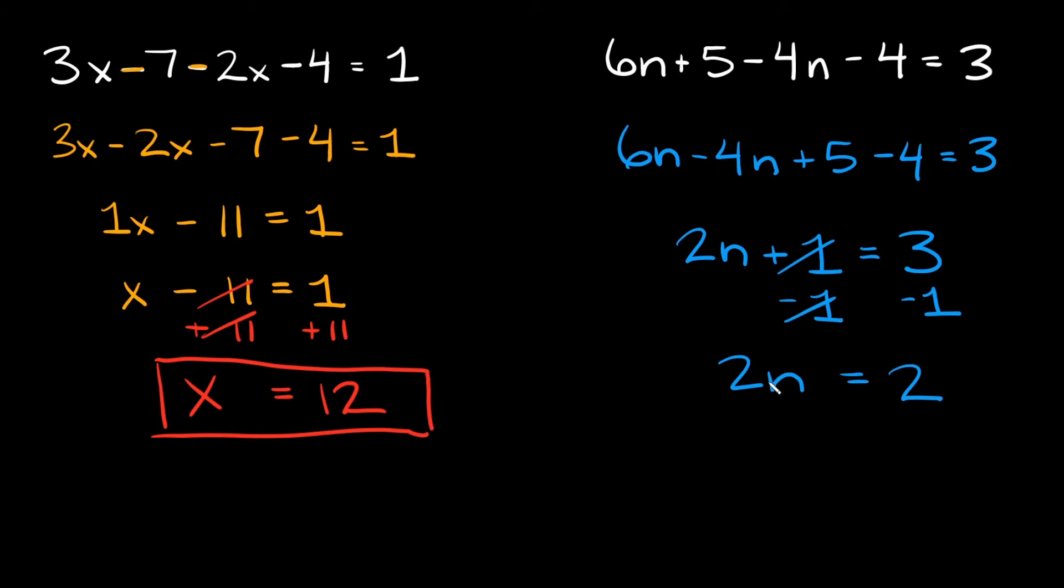We almost have n by itself but we're multiplying by 2. In order to undo the multiplication we're going to divide. What are you going to divide by? Well by whatever you're trying to get rid of. So if we want n by itself we need to get rid of the 2. We're going to divide by 2 and remember what you do to one side you do to the other. These 2's cancel out so on this side all we're left with is n and then that's going to be equal to 2 divided by 2 which is just 1. So your answer right here is n is equal to 1.